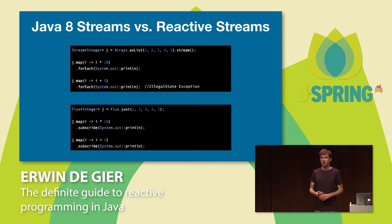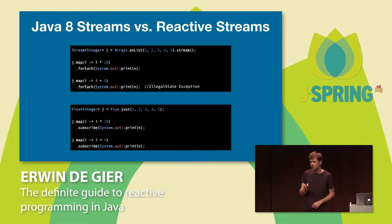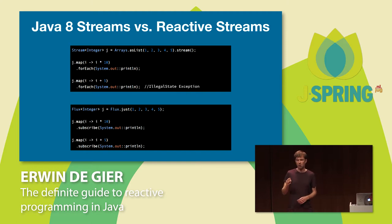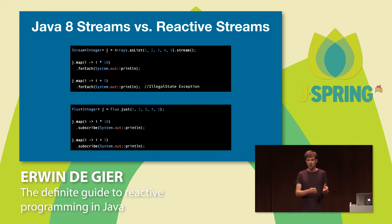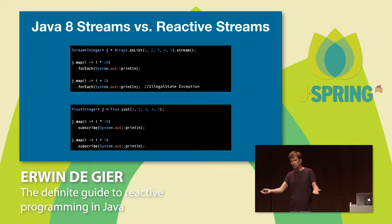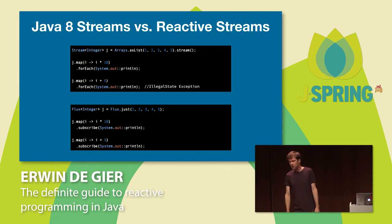One more difference between Java 8 streams and Reactive Streams: Java 8 streams are not reusable. If you create a stream from a list, you can do operations on it only once — a second attempt gives you an exception. For reactive streams — observables or Flux — you can just reuse the source. You can have multiple subscribers to your data. So if you have a data stream coming in, maybe you want to write it to the database but also write it to a file — this is perfectly possible. You can have multiple clients for your streams.